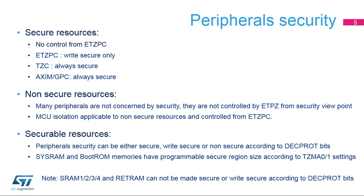Securable resources: peripheral security can be either secure, write secure, or non-secure according to DECPROT bits. SysRAM and boot ROM memories have a programmable secure region size according to TZMA0 and TZMA1 settings. Note: SRAM 1, 2, 3, and 4 and RETRAM cannot be made secure or write secure according to DECPROT bits.